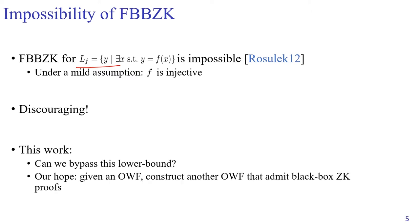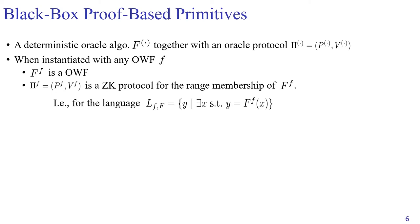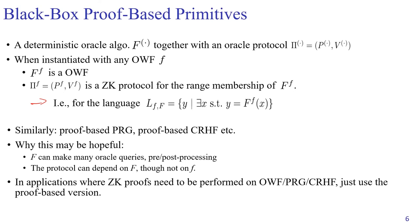So why can we even hope for bypassing this lower bound? If you look at the Resulac lower bound carefully, it says for a given one-way function f, you cannot have a black box protocol for the range membership of this one-way function. Our idea is to construct a new one-way function from the given one-way function, and then try to construct a zero knowledge protocol for the new one-way function in a black box way. More formally, we are looking for an oracle algorithm F and an oracle protocol π. If we instantiate them with a one-way function f, F^f will be a one-way function, and π^f will be a zero knowledge protocol for the range membership of the new one-way function F^f — this new black box language. Both F^f and π^f make only black box access to f.